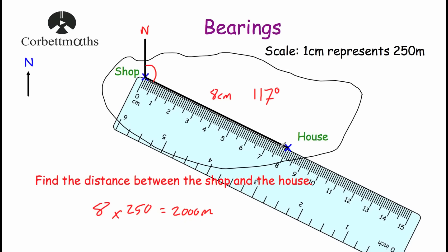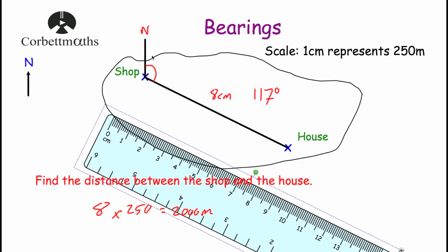So in this video we looked at what bearings are. Bearings are a direction of travel, they're measured clockwise from north, and they always have three figures. So if it's less than 100, make sure you put your zero in front. And that's it.